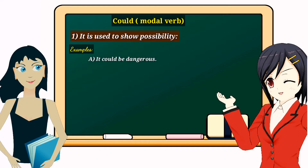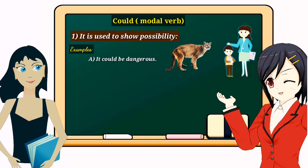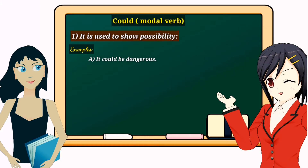For example, 'It could be dangerous' — here 'could' is used to show that something is possibly dangerous. For instance, you see a wild animal and say to your friend, 'It could be dangerous.' Another example: 'The storm could get worse,' meaning there is a possibility that the storm can become worse.